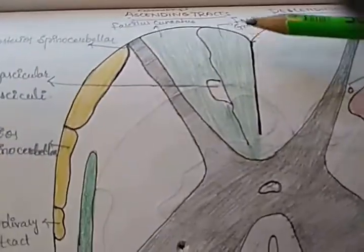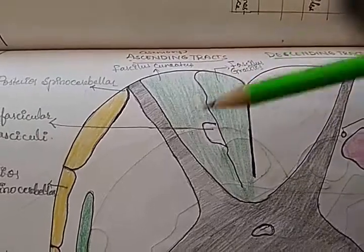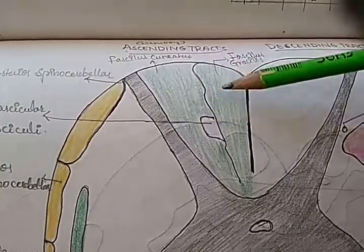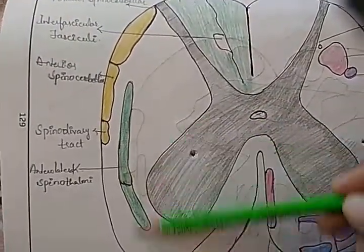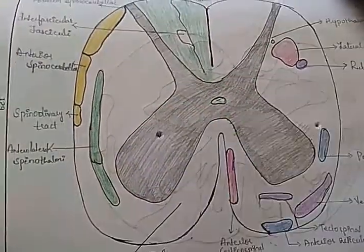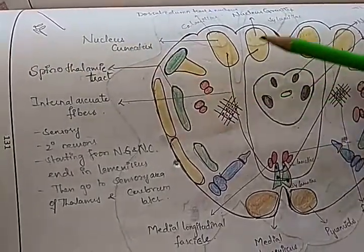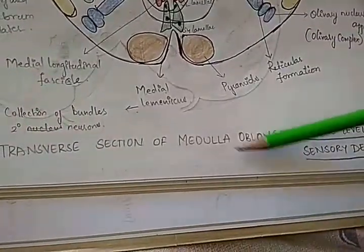So this was fasciculus gracilis. And next to it, whatever you're seeing here is fasciculus cuneatus. These things are, you should remember these. This is anterolateral spinothalamic. The spinothalamic tract actually. These are the tracts, which portion of the central nervous system? This is at the medulla oblongata.